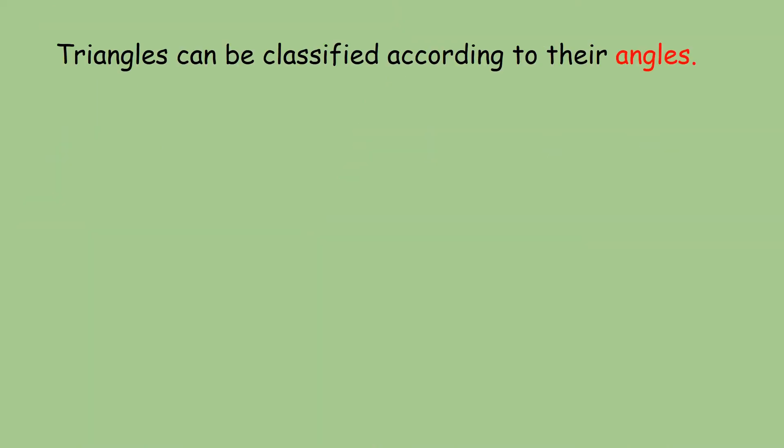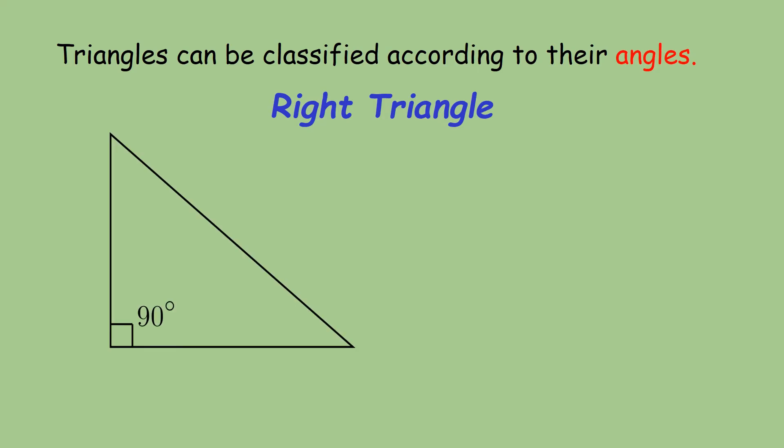Triangles can also be classified according to their angles. The first one is the right triangle. How can we say that this picture is a right triangle? It is because it has a right angle which measures 90 degrees. Therefore, triangle A, B, C is a right triangle.